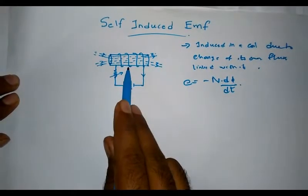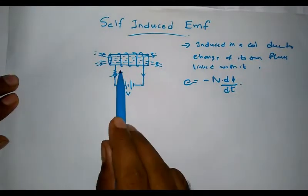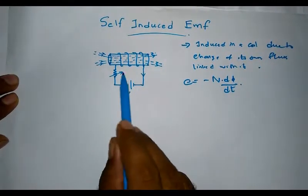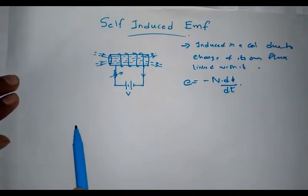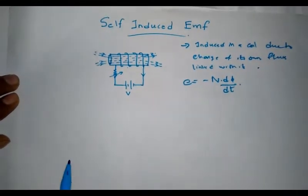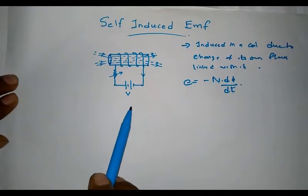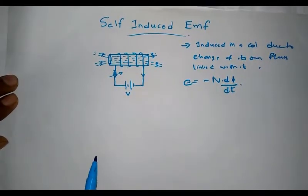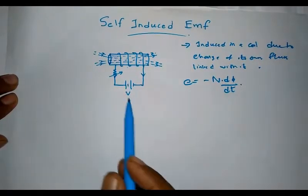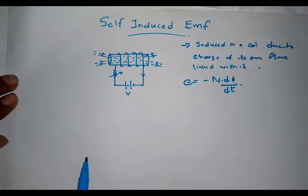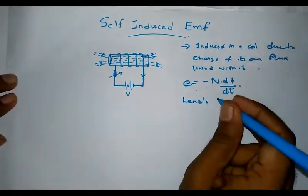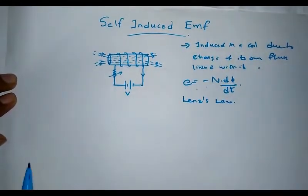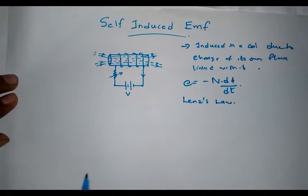The EMF is induced in the conductor due to the change in current flowing through the coil. When the current flowing through the conductor changes, the flux linking with the conductor itself changes, and EMF is induced according to Faraday's law. This induced EMF is known as self-induced EMF, and its direction, given by E = −N × dΦ/dt, opposes the cause producing it.